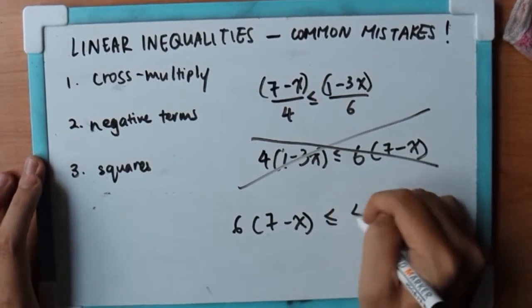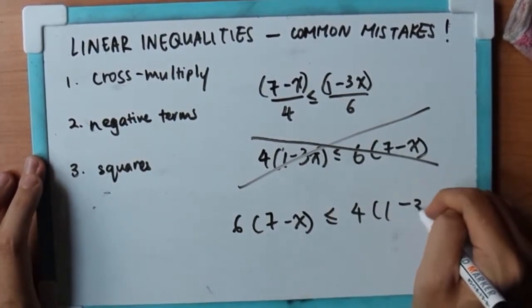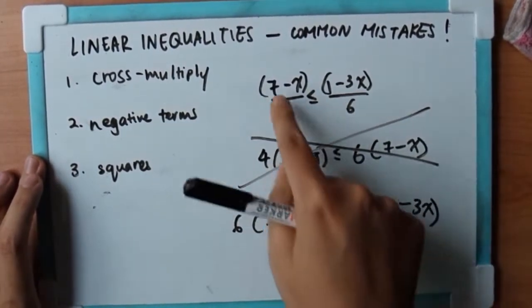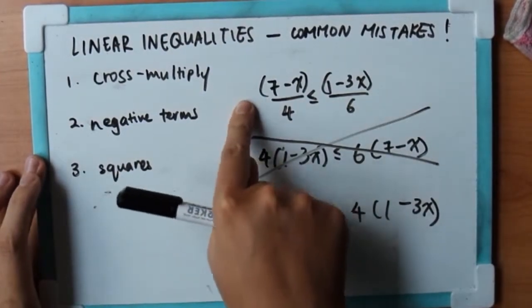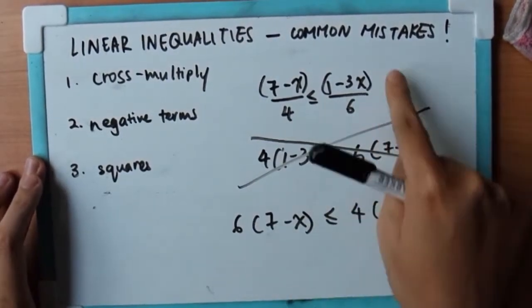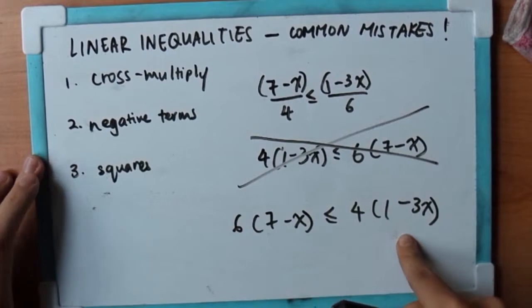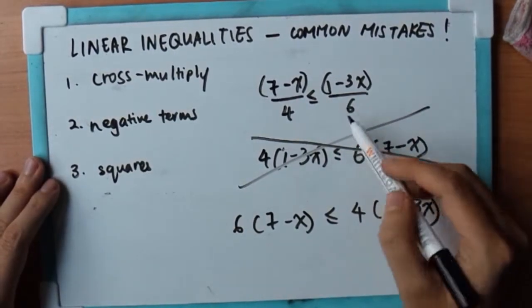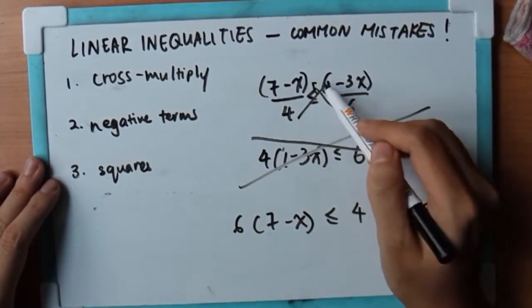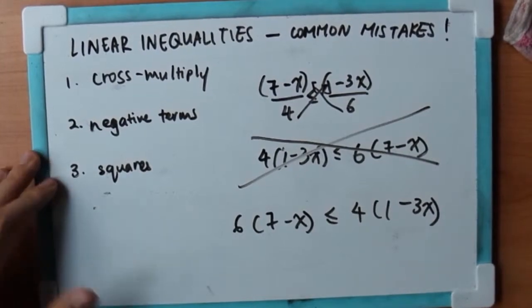So as you can see, this is the right answer. Because 7-x was originally on the left, it's still on the left. This is on the right, this is still on the right. The denominator will accommodate to the numerator. Then you can just solve it.